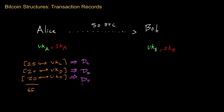At this point in the transaction, we have details about Alice's ownership of these 65 Bitcoins, and she has enough information in the transaction so that anybody can verify that she possessed these coins. You can think of this part of the transaction as representing the input to the transaction. In addition to the input portion, there is typically also an output portion.